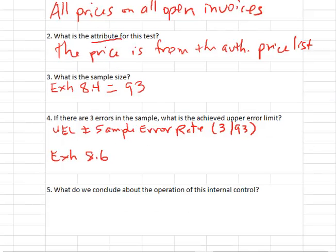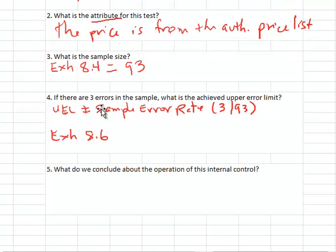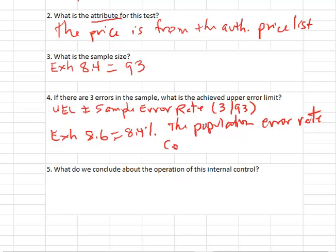What this means is the upper error limit of 8.4% means the population error rate could be as high as 8.4%. We don't know what the population error rate is because we only tested a sample, but we think it could be as high as 8.4%.